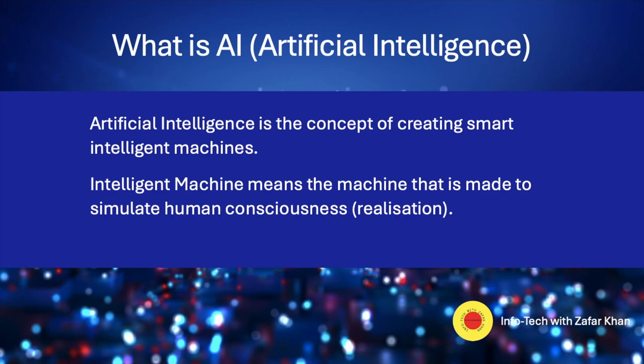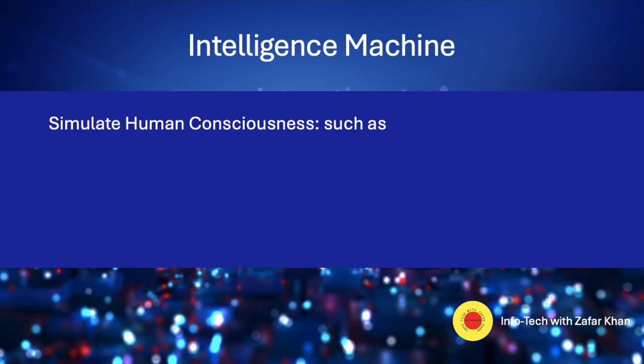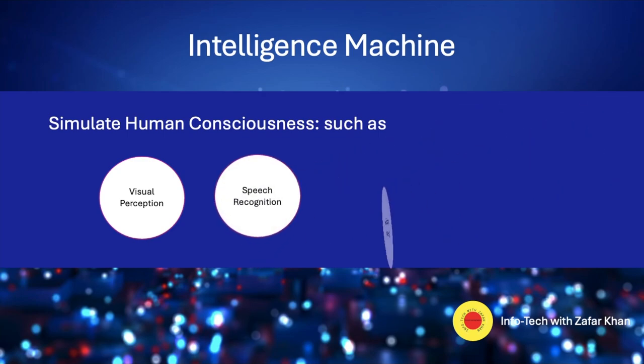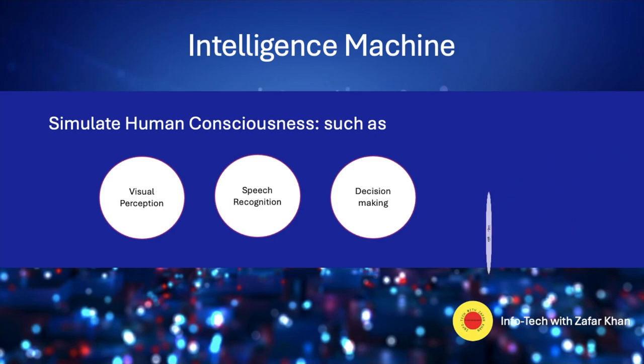Artificial intelligence in its broad sense is intelligence exhibited by machines, particularly computer systems. In another way, you can say that artificial intelligence is the concept of creating a smart, intelligent machine. An intelligent machine is basically a machine that is made to simulate human consciousness, such as visual perception, speech recognition, decision making, and translation between languages.